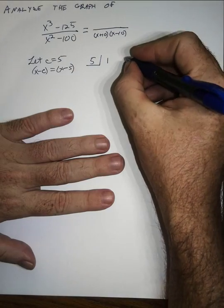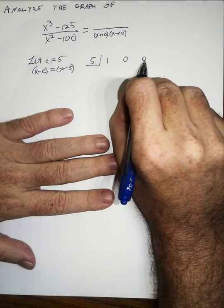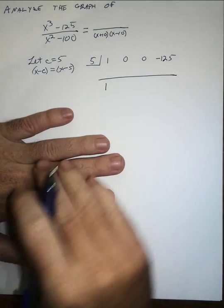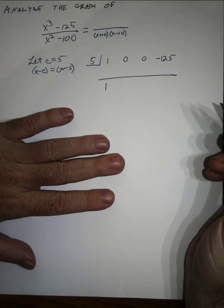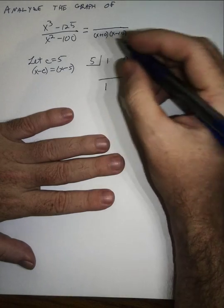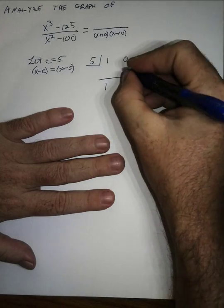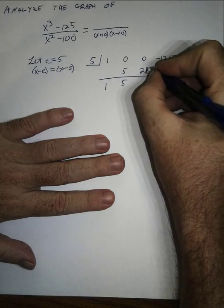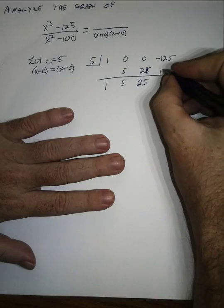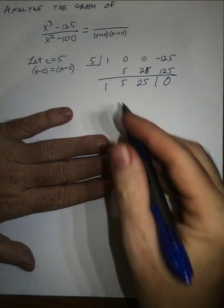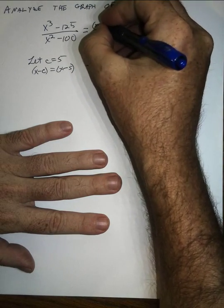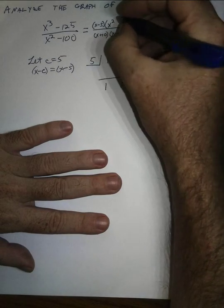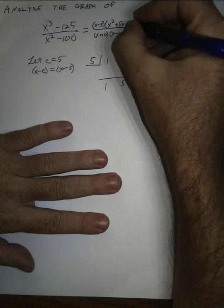Writing out the coefficients for synthetic division, we need to include 0 for the x squared and x terms: 1, 0, 0, −125. It's multiply and add. 5 times 1 is 5; add to get 5. 5 times 5 is 25; add to get 25. 5 times 25 is 125; add to get 0. So we can write this as (x − 5) times the residual (x² + 5x + 25).